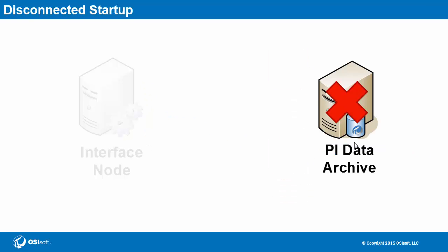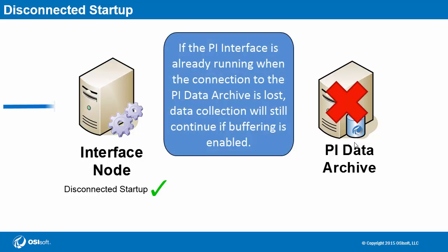Another consideration with PI Interfaces is a feature called disconnected startup. By saving a copy of PI Point configuration locally on the interface machine, interface instances can start up without a connection to the PI Data Archive. If the PI Data Archive is unavailable, the PI Interface cannot normally be started because it needs to retrieve PI Point information before starting any data collection. But disconnected startup allows the interface to bypass this restriction and provides a local copy of PI Points on the interface itself. If the PI Data Archive is down, users won't be able to grab data, but at least the interface can successfully collect and buffer data, which will be later sent to the PI Data Archive.